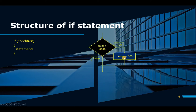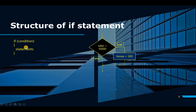Let's look at the structure of an IF statement. Here I have a small flowchart: if the sales of a specific store are greater than $50,000, then we'll give a bonus of $500, otherwise we won't do anything else. The condition looks like this — we put the keyword IF, then in brackets we put our condition. If the condition is TRUE, then we write our statements inside. If it is not TRUE, it will not go inside and will jump outside. So the code looks like: if sales > 50000, then bonus = 500.